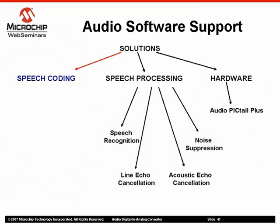The Speech Processing Algorithms comprise signal processing algorithms that perform different functions on speech signals. The Noise Suppression Algorithm reduces the background noise. The Acoustic Echo Cancellation reduces the echo due to the acoustic coupling between a speaker and microphone. Line Echo Cancellation reduces the echo from an impedance mismatch in telecommunication networks.